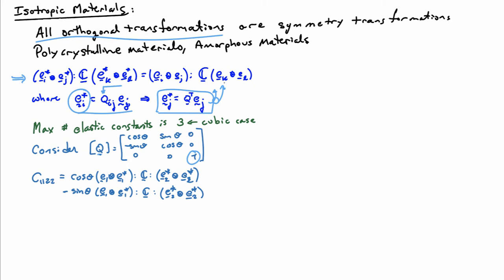Let's look at the 1,1,2,2 component. That means I set i and j equal to one, and k and l equal to two. If I do that and plug in, I can find E_1* out of this relationship. So E_1* is going to be cosine(theta) E_1 minus sine(theta) E_2. If I plug that in for E_1*, it's going to split into two terms: a cosine(theta) E_1 term and a minus sine(theta) E_2 term.